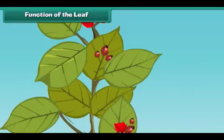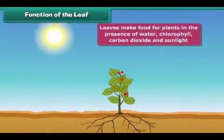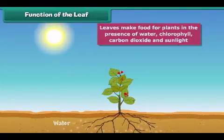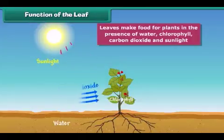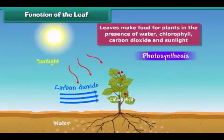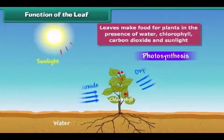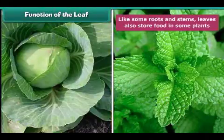Now let's discuss the main functions of a leaf. The main function of a leaf is to make food for the plant. For making food they use water, chlorophyll, carbon dioxide and sunlight. This process of making food is called photosynthesis. In this process oxygen is released. All living things require oxygen for breathing. Some plants like cabbage and mint store food in their leaves — we eat these leaves to get nutrition.